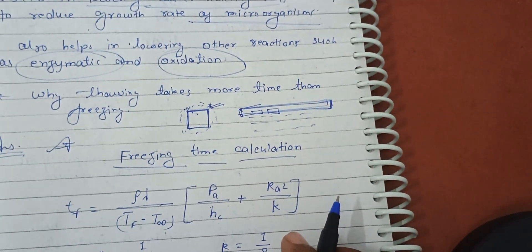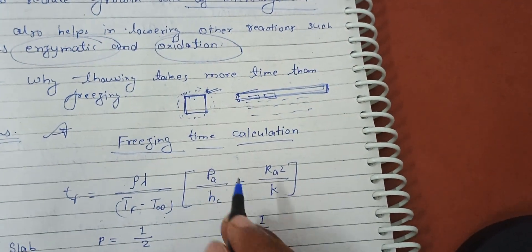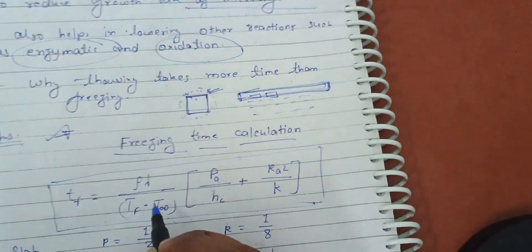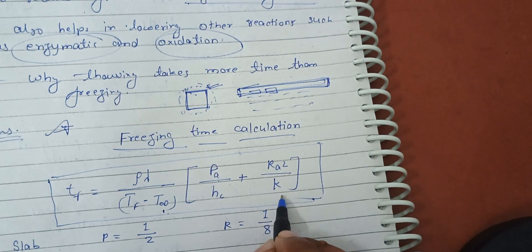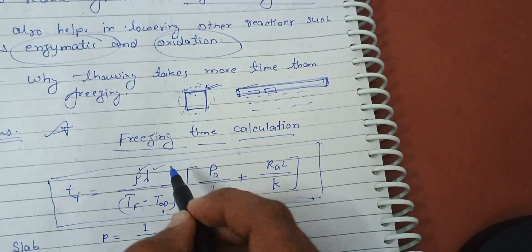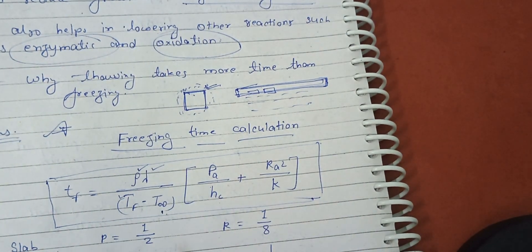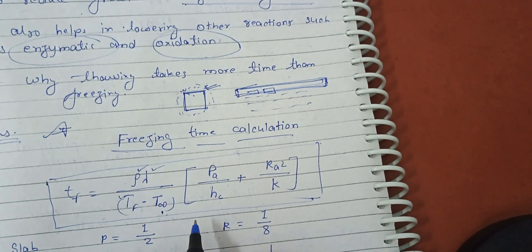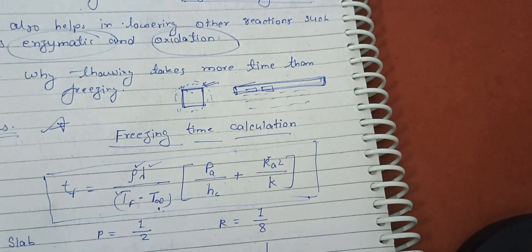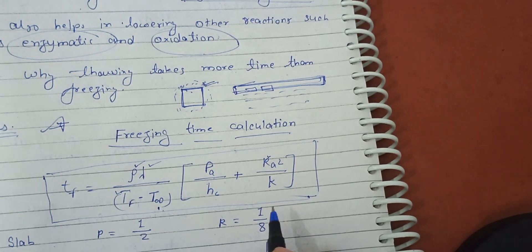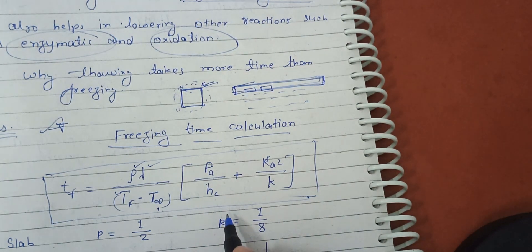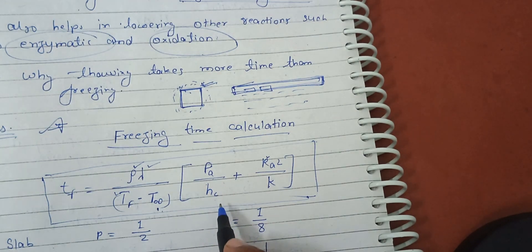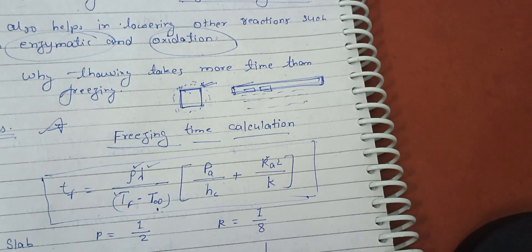To calculate freezing time, we use Plank's equation: tf = (ρ·λ / (Tf − T∞)) × (P·a/hc + R·a²/k), where ρ is the density of the product, λ is the latent heat of fusion, Tf is the initial freezing temperature, T∞ is the temperature of the cooling medium, P and R are shape constants, a is the product size (thickness or diameter), h is the convective heat transfer coefficient, and k is the thermal conductivity.